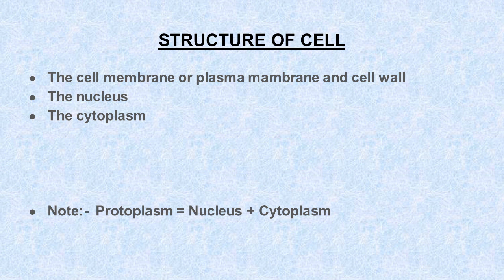What is protoplasm, students? The colorless material comprising the living part of a cell, including the cytoplasm, the nucleus, and other organelles.